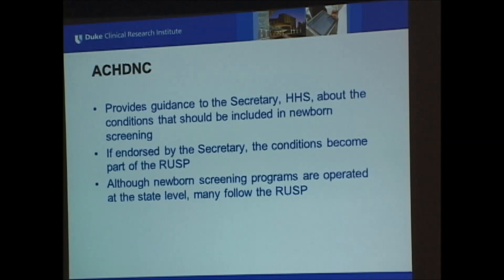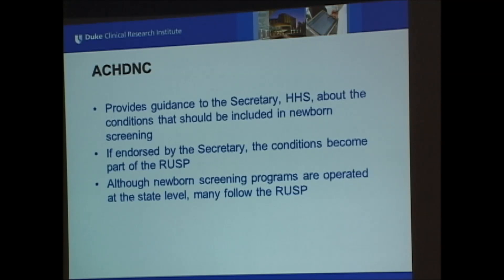The Advisory Committee on Heritable Disorders in Newborns and Children provides guidance to the Secretary of Health and Human Services about the conditions that should be included in newborn screening. The advisory committee itself doesn't add things to newborn screening — it's operated at the state level, but informed by the Recommended Uniform Screening Panel, and it's the Secretary that adds things onto that panel, based in part on advice from the advisory committee.